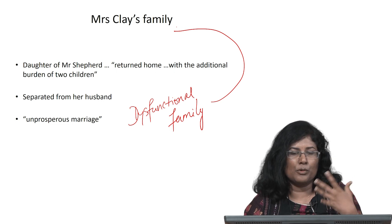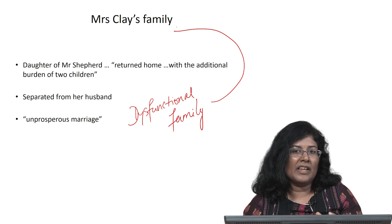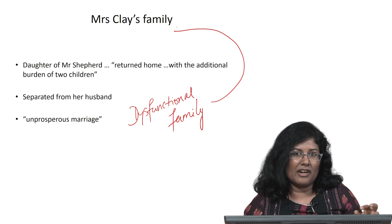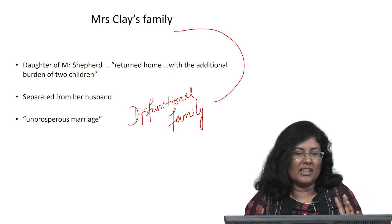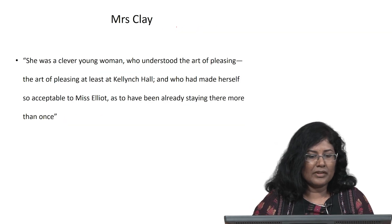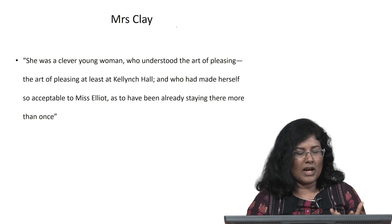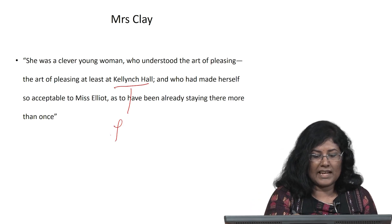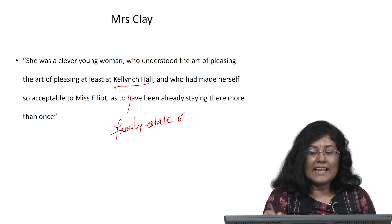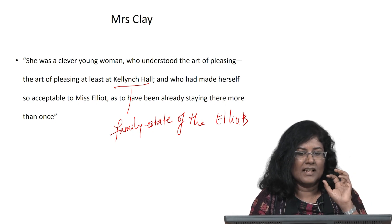So already you can get a sense that there are three dysfunctional families. The first is Sir Walter Elliot, a widower with three daughters. Then we have Lady Russell, who spends quite a bit of time with the Elliot family and seems to have no family at all. And then we have Mrs. Clay. The narrator says she was a clever young woman who understood the art of pleasing — at least at Kellynch Hall — and had made herself so acceptable to Miss Elliot as to have been already staying there more than once. Kellynch Hall is the family estate of the Elliots.